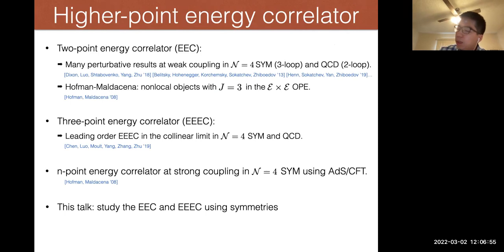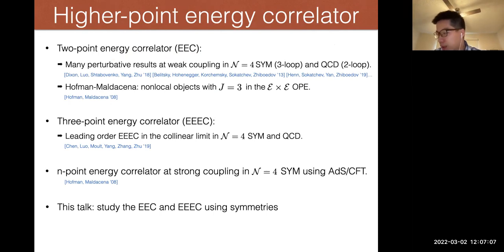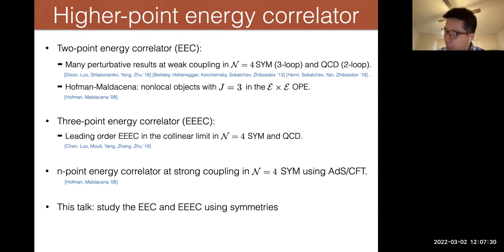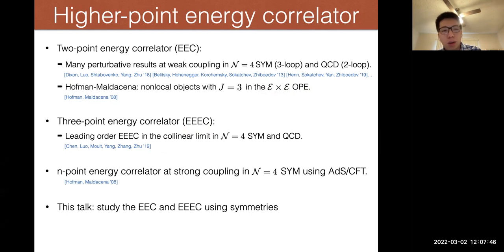For the two-point energy correlator, or EEC, there are many results in perturbation theory. At weak coupling it's known up to three loops in N=4 super Yang-Mills, and done up to two loops in QCD. Hofman and Maldacena also argued that you can take an OPE between two energy detectors, and the objects appearing in the OPE should be something with spin three. For the three-point energy correlator, it's been computed recently at leading order in weakly-coupled N=4 and QCD, and they also consider the leading behavior in the collinear limit, where all three detectors become close to each other.